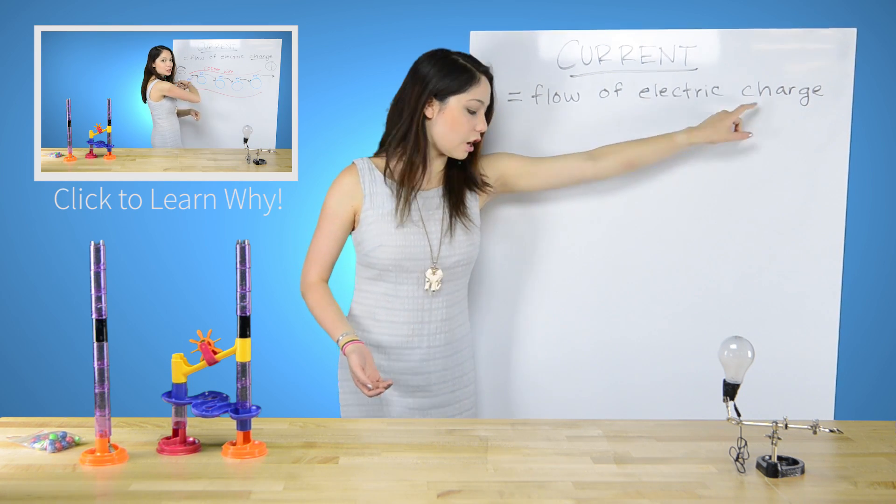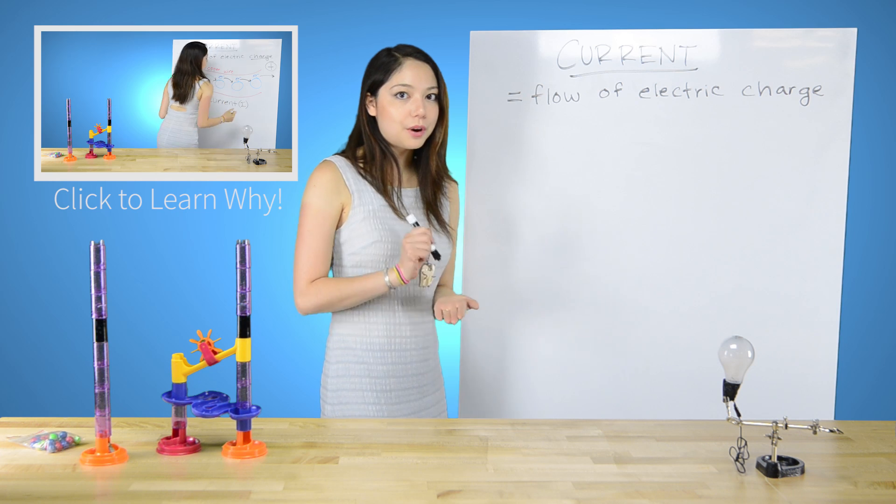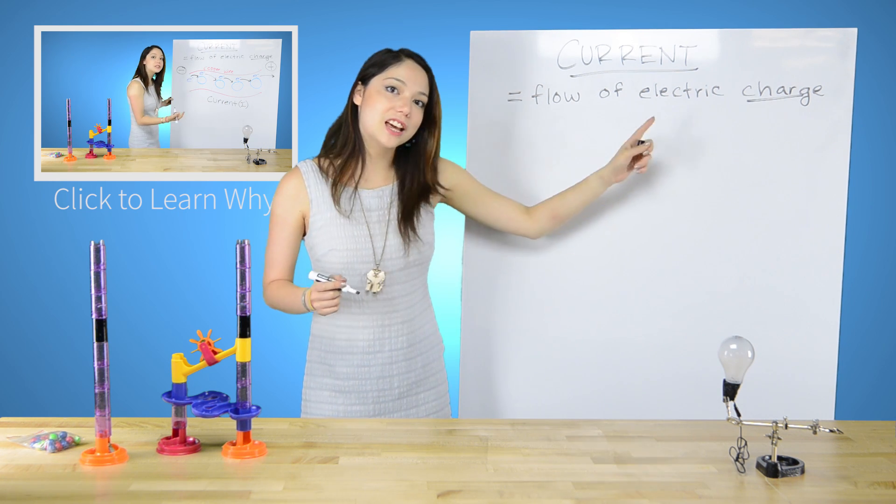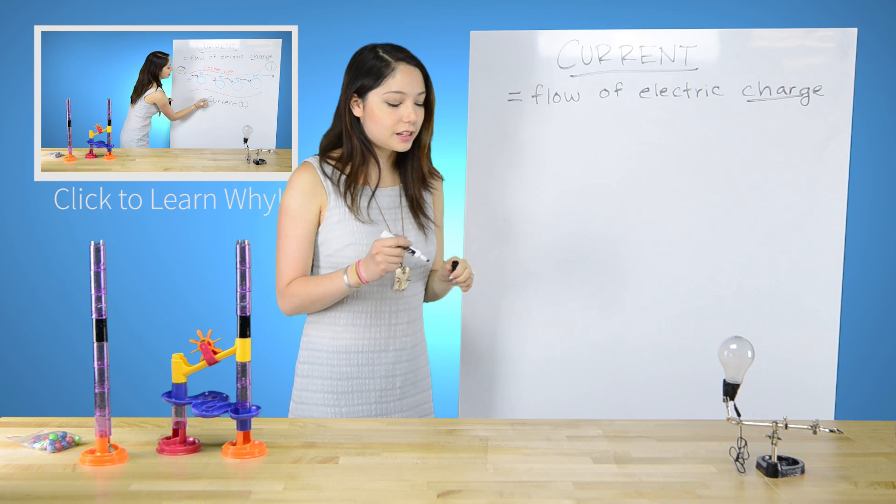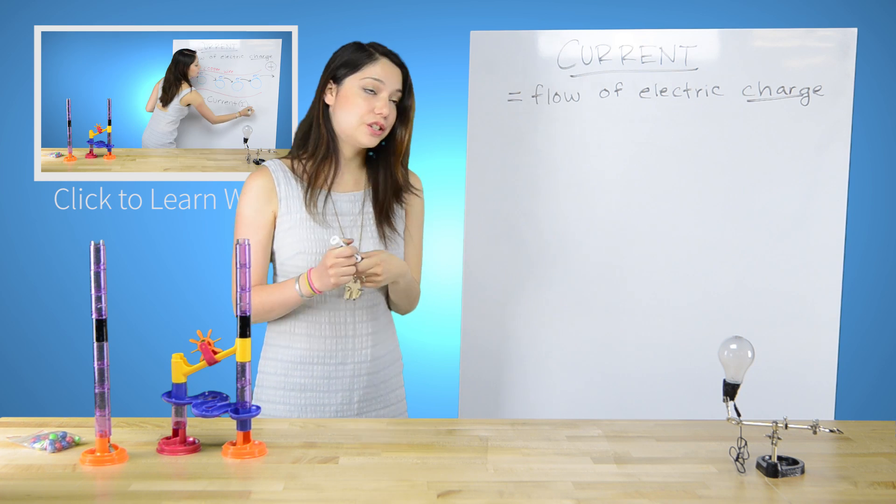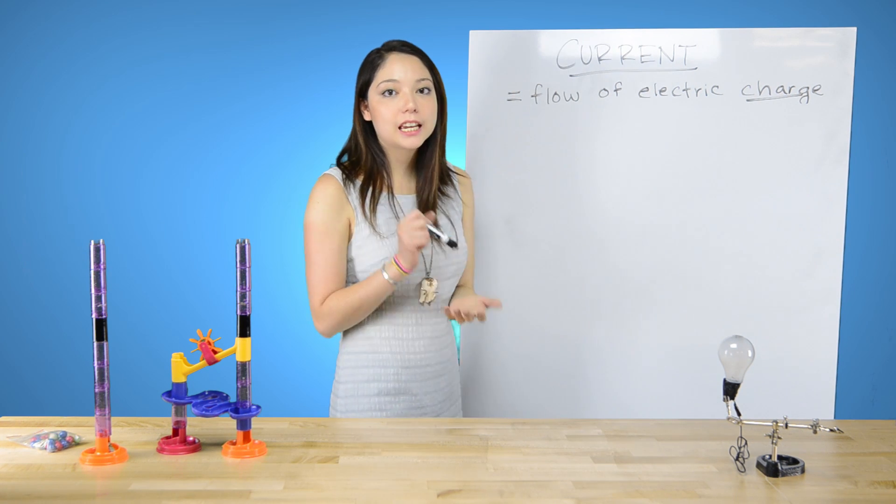And notice that the charge here is really important because it is not the flow of electrons. Don't think of it as the flow of electrons. And I'll tell you why in a second. It's the flow of charge. But as an example, let's take a battery.